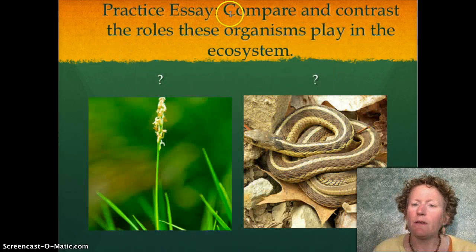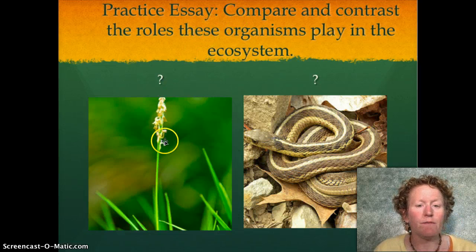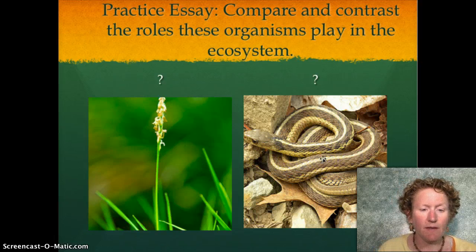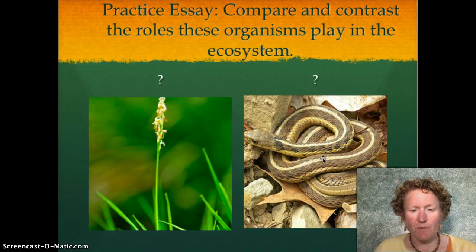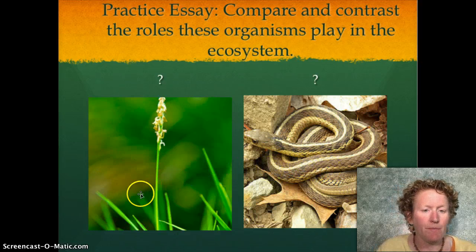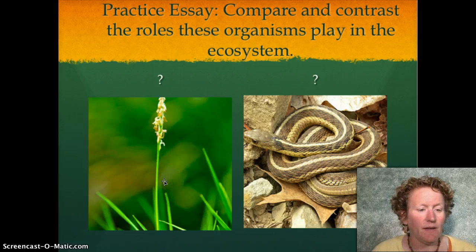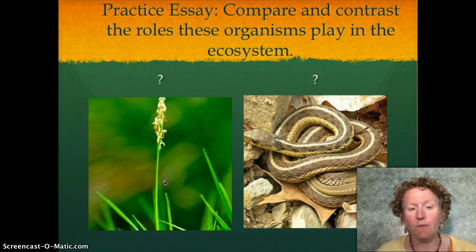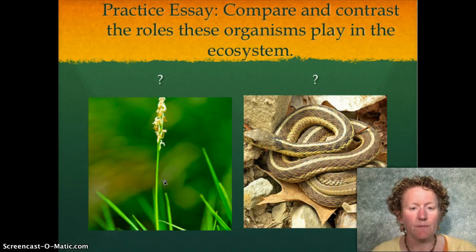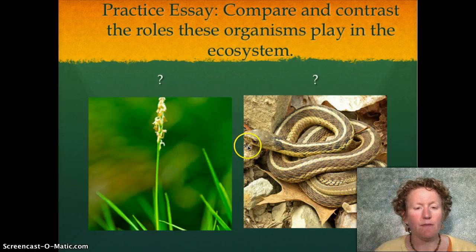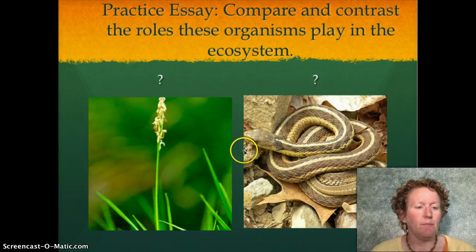Here is a practice essay question: compare and contrast the roles of these two organisms in the ecosystem. This is a snake — snakes obviously do not get their energy from the sun. They might lay in the sun to get warm, but that's not how they get their food energy. Plants, on the other hand, sit there and absorb energy from the sun, using that to convert carbon dioxide and water into glucose. Between the snake and the grass, there might be a grasshopper eating the grass, and the snake might eat the grasshopper.